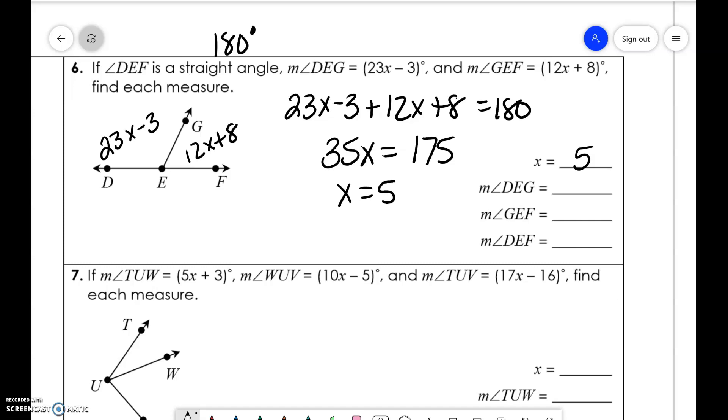DEG, 23 times 5 minus 3 is 112. GEF is 12 times 5 plus 8 is 68. And DEF, we already know because we used in the problem, which was 180.